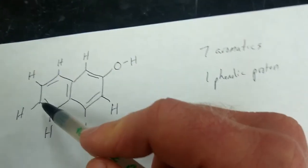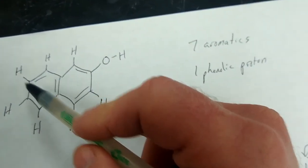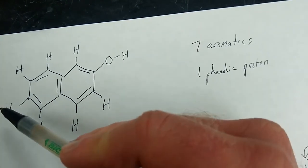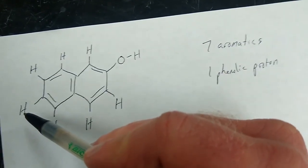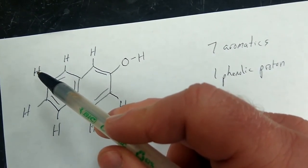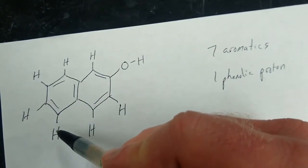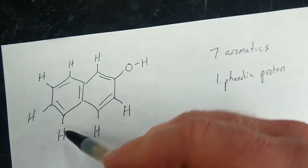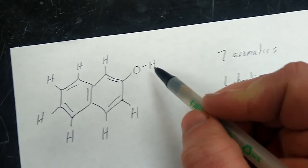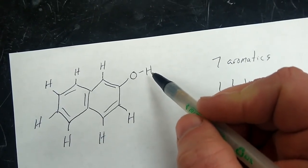For example, this one, it's got one proton on this side, one proton on that side, so two plus one, that means this signal should be a triplet. This one has two neighbors, so that should be a triplet. One neighbor, so it should be a doublet, and so on. And then of course your OH has zero neighbors, and that's why that's a singlet.